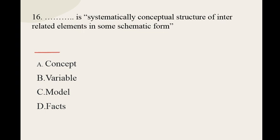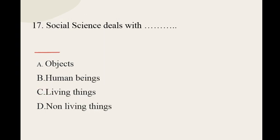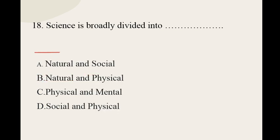Question number sixteen: What is a systematically conceptual structure of interrelated elements in some schematic form? Options are concept, variable, model, and facts. The correct option for question number sixteen is model. Question number seventeen: Social science deals with — options are objects, human beings, living things, and non-living things. The correct option is human beings.